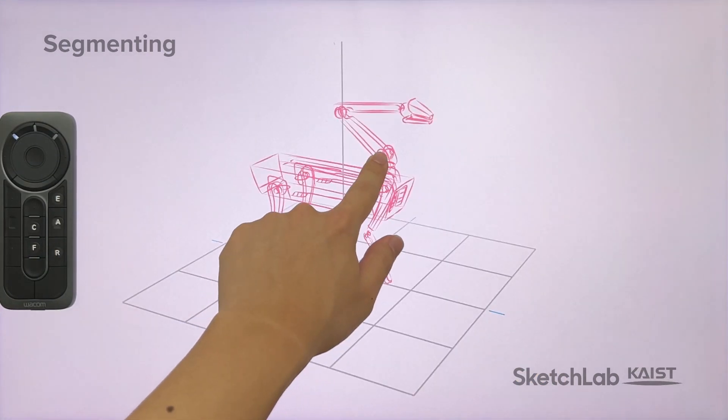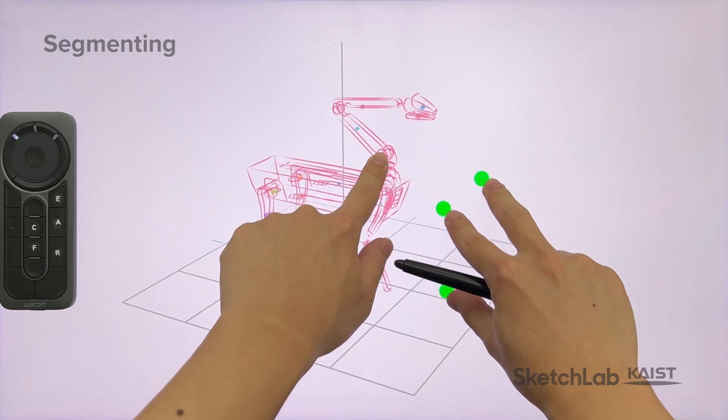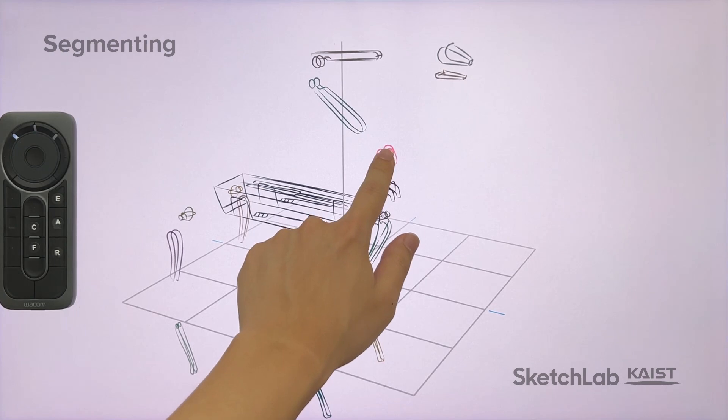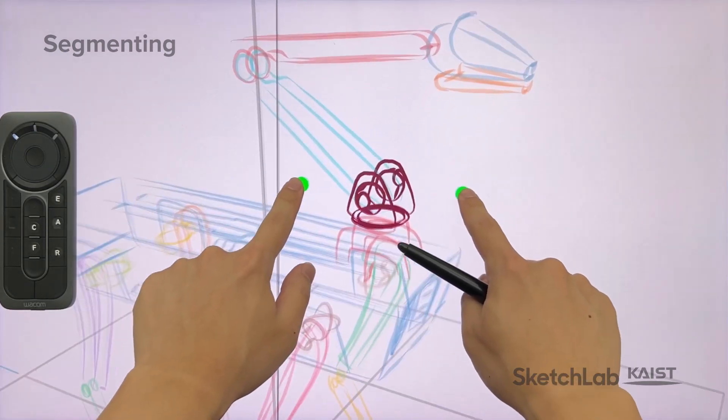While holding down a part to keep still with the left hand, with the right hand, the designer can pull other parts apart with three fingers to enter the exploded view, where the designer can select a part to work on independently from other parts.